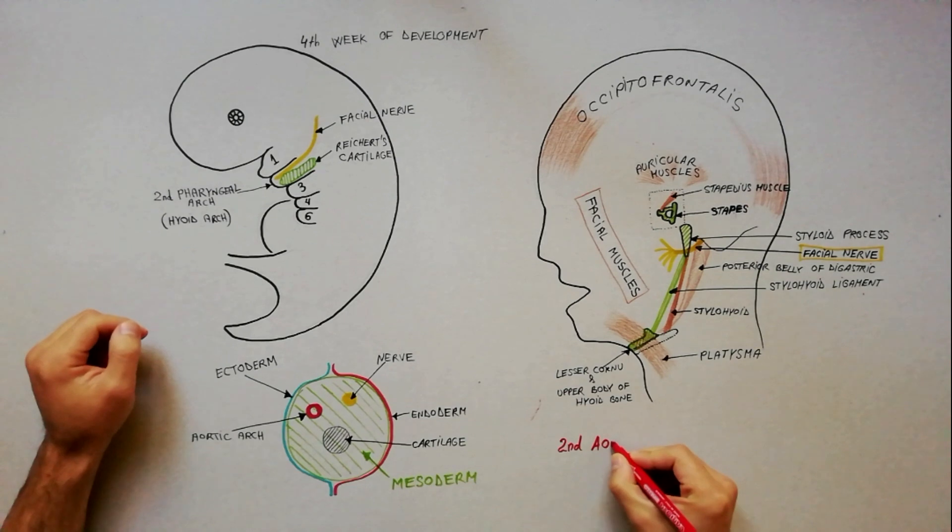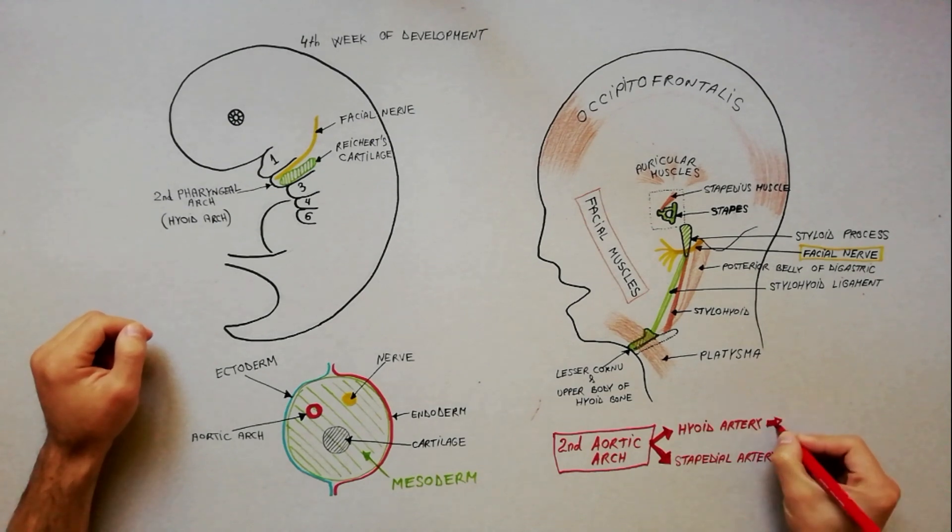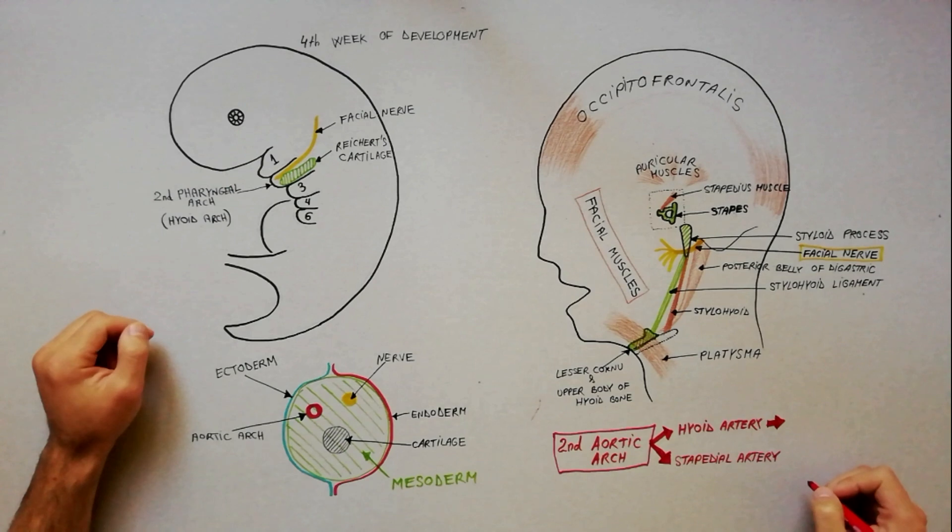The artery of the second pharyngeal arch is the second aortic arch, which gives origin to the hyoid artery and its branch, the stapedial artery. The stapedial artery atrophies while remnants of the hyoid artery persist in adults as the caroticotympanic arteries.